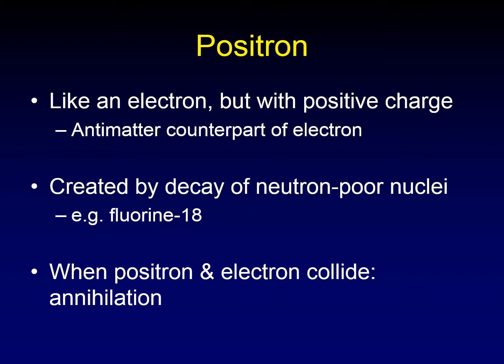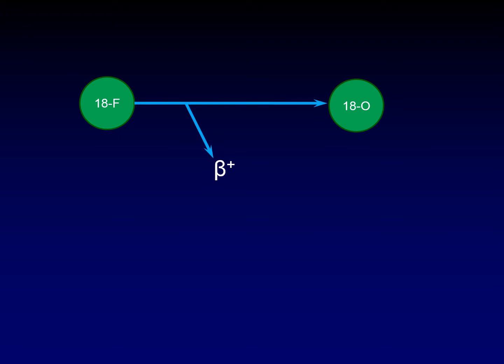An important thing to understand is that when a positron and an electron collide, they annihilate one another. Matter and antimatter annihilate one another in an explosion. So here's our fluorine-18 molecule going about its everyday life, but it's unstable. When it degrades, it turns into oxygen-18 and emits a positron — that's this beta-positive right here.